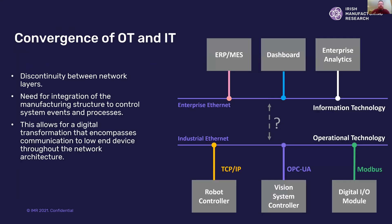One of the big challenges in factories is the convergence of the operational technology and information technology layers — traditionally there's a discontinuity between them. For example, if you want to take information from devices on the factory floor and store it on an enterprise system for managing databases of manufacturing data, dashboards, reporting, and data analytics, there has to be a bridge between these two layers. This enables opportunities such as performance monitoring, predictive maintenance based on data flowing within the factory, and comparison of asset performance across an enterprise system.